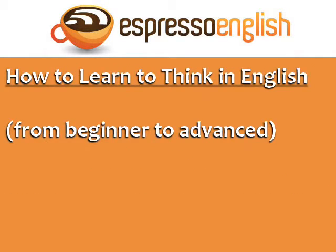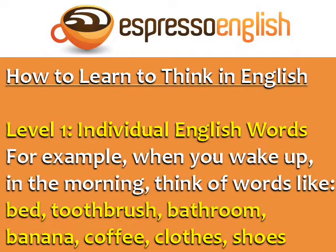So here is how you can learn to think in English from the beginner level to advanced. Level 1 is thinking in individual English words. For example, when you wake up in the morning, think of words like bed, toothbrush, bathroom, eat, banana, coffee, clothes, and shoes.